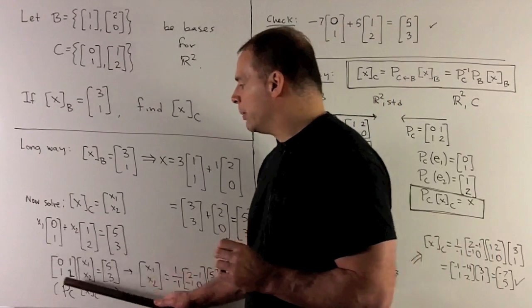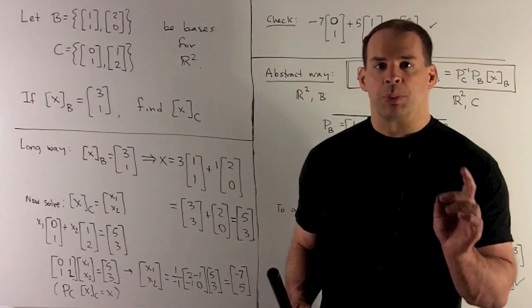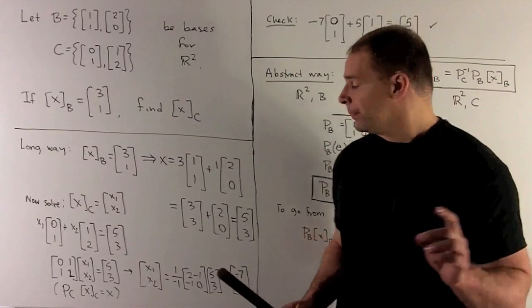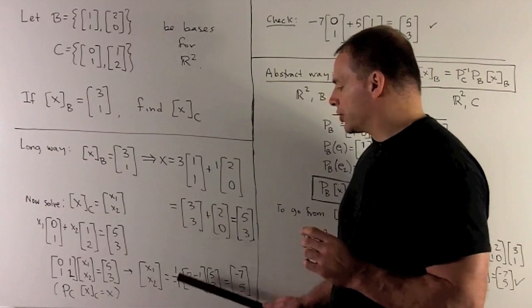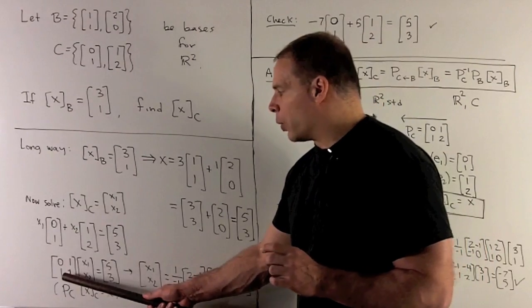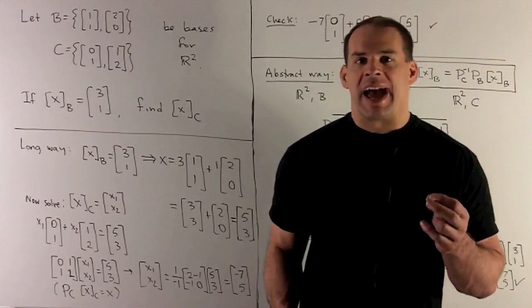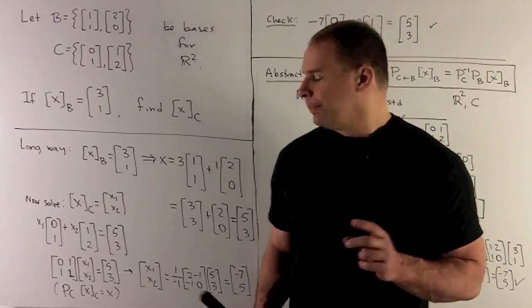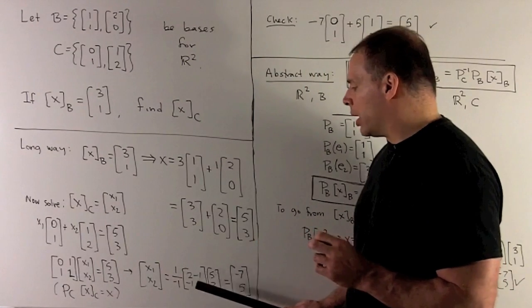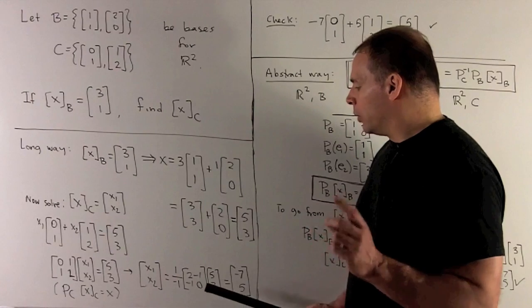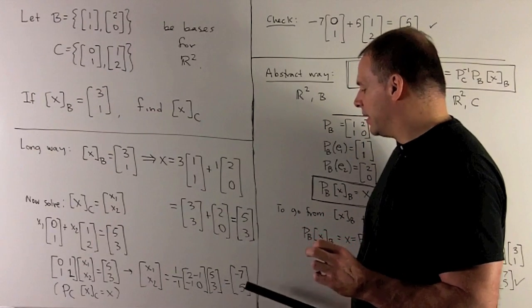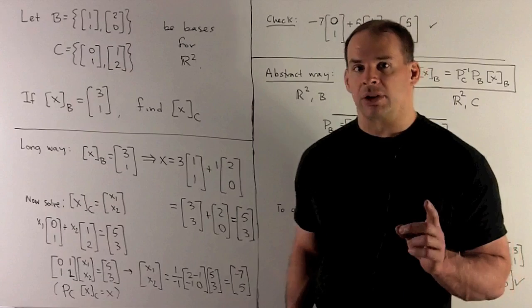Then what can I do? I have a 2x2 matrix here, so I'll just push it to the other side as its inverse. That's going to be 1 over the determinant, so the determinant's minus 1. And then we just use our 2x2 rule, so I'm going to flip on the diagonal, negate off the diagonal. So that gives me [2,-1; -1,0]. We apply that to [5,3], and then I get [-7,5] for my coordinate vector.